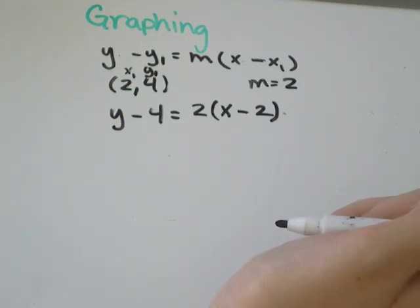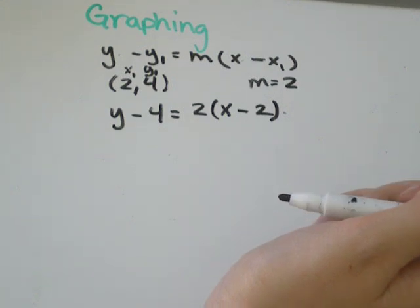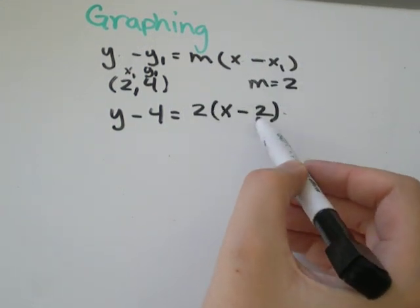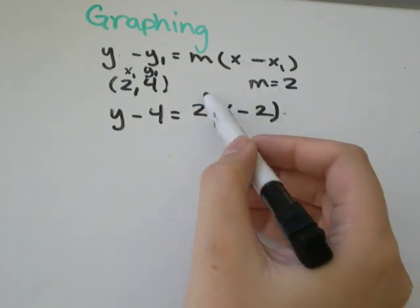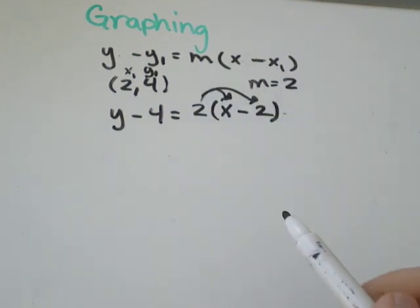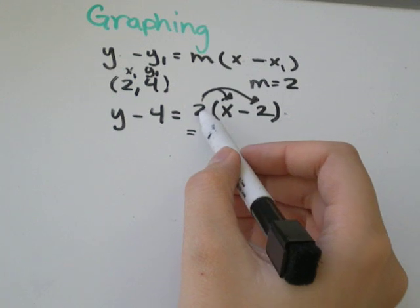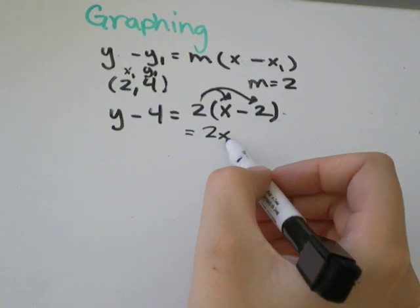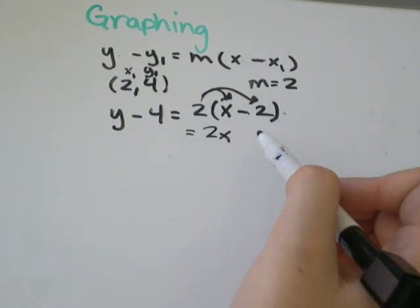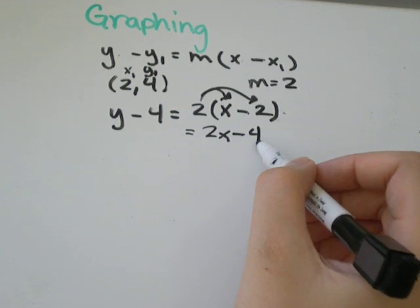You might rather put it into slope-intercept form. To do that, what you need to do is get rid of these brackets. So we will distribute our 2 into the brackets. 2 times x would be 2x. 2 times negative 2 would be negative 4.